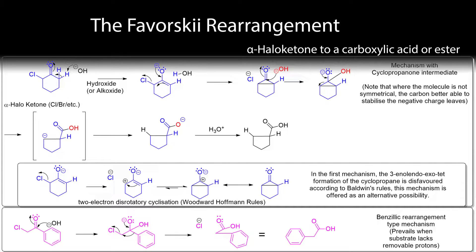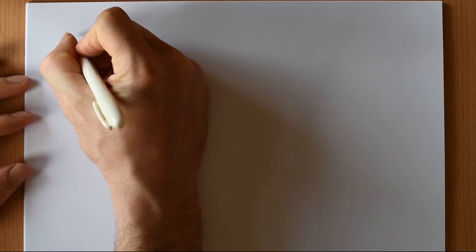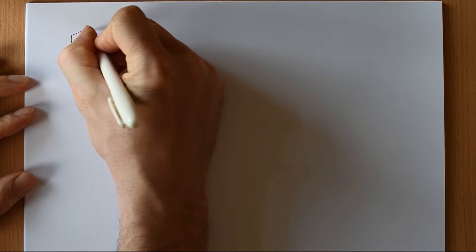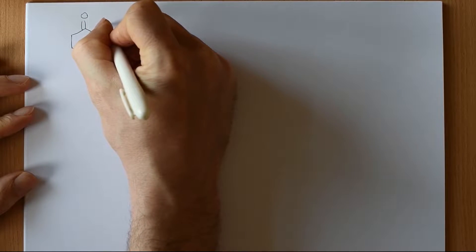Okay, the Favorski rearrangement is a reaction that occurs when you expose an alpha-halo ketone to a basic environment. So a typical substrate might be cyclohexanone, so 2-chloro-cyclohexanone.